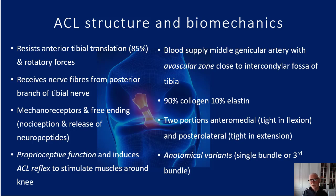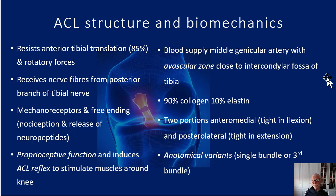The blood flow to the ACL comes from the middle genicular artery, but there's an avascular zone close to the intercondylar fossa of the tibia, so the healing rate can be impaired. It is a tough structure — about 90% collagen and about 10% elastin — so there is a springiness and resilience within the tendon. When we do a repair, we have to try to reproduce that.